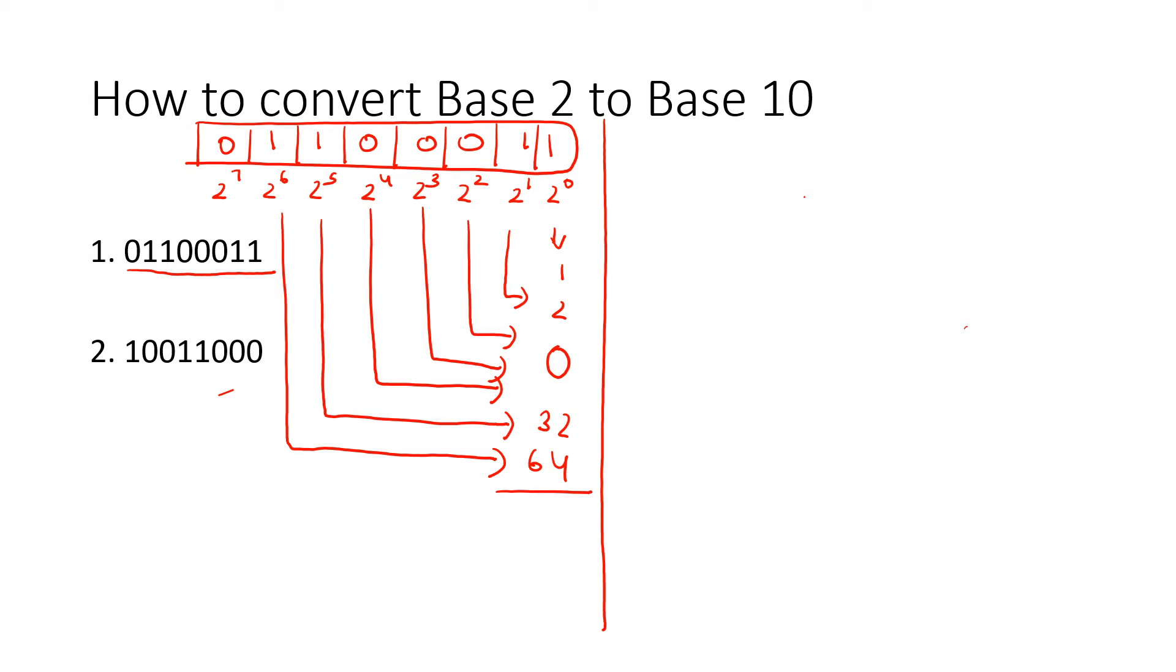Now when I'm going to add this all together, it's going to be 1 plus 2, which is 3. Then 3 plus 32, which is 35. And 35 plus 64, which is 99. So I conclude that this binary number here is equal to 99.